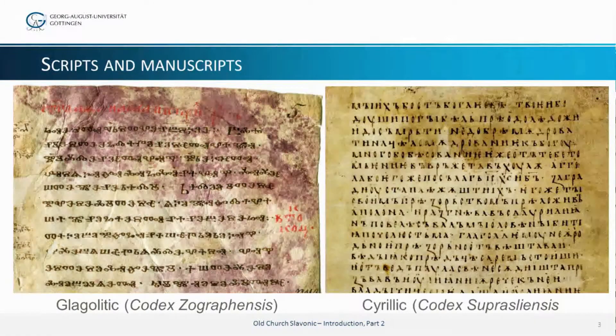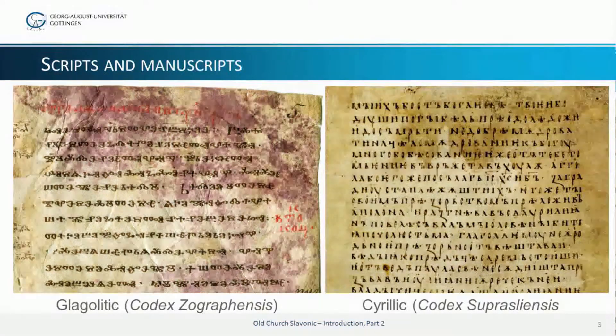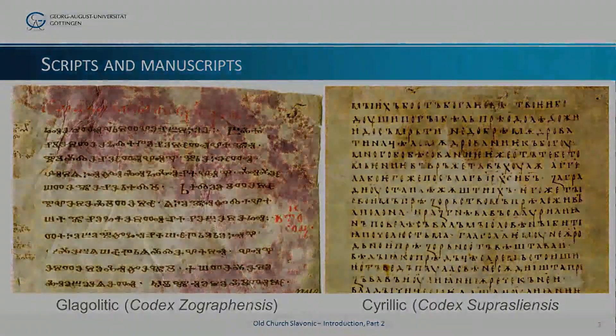Here is a picture showing a page from another Old Church Slavonic manuscript, the Codex Suprasliensis. As you can see, it's written in a totally different script, the one called Cyrillic.